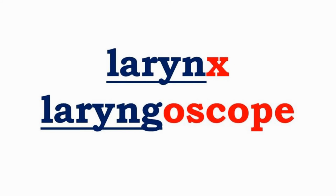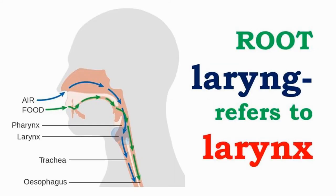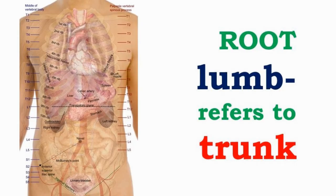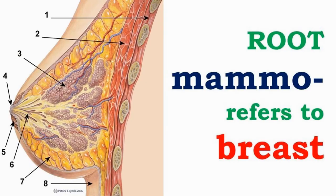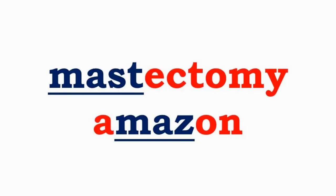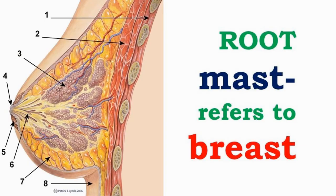Larynx has the root laryngeal, which means of or pertaining to the larynx or voice box. Lumbar has the root lumbo or lumbar, which means of or pertaining to the trunk. Mammogram has the root mammo, which means of or pertaining to the breast. Mastectomy and Amazon have the root masto, which means of or pertaining to the breast.